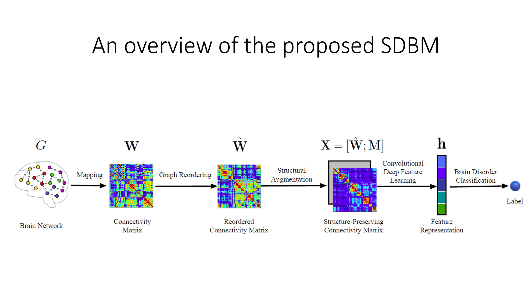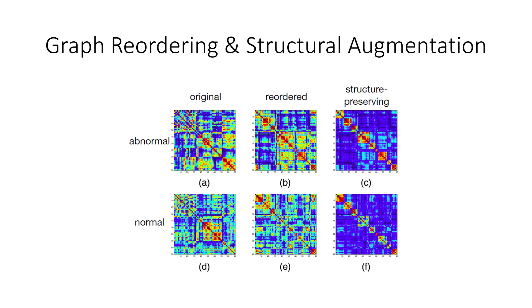Here is an overview of the proposed SDBN method. A graph reordering technique is proposed with the help of structural clustering. The technique corresponds brain networks from different subjects and makes them comparable and exposes the graph modular structure. A structure augmentation is also introduced to enhance the structure information by adding the spatial information and to alleviate the effects of the noise.